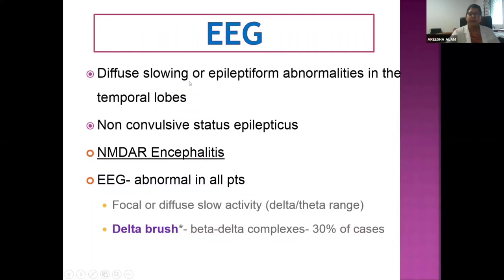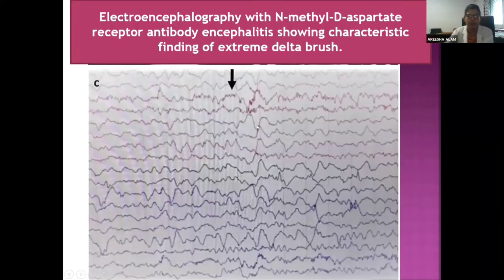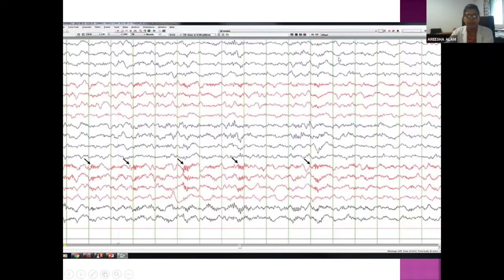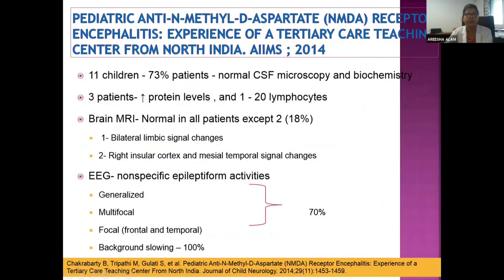EEG typically shows diffuse slowing or epileptiform abnormalities in the temporal lobes, and can diagnose non-convulsive status epilepticus. In NMDA receptor encephalitis, EEG is abnormal in all patients. A highly significant and diagnostic finding is the 'delta brush' — beta-delta complexes consisting of slow delta waves with fast beta activity superimposed — seen in about 30% of cases. The same AIIMS study found that 73% of patients had normal CSF, 80% had normal MRI, but EEG was abnormal in 100% of cases, with background slowing as a consistent feature plus focal, multifocal, or generalized epileptiform activity.